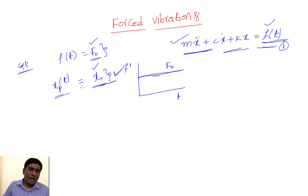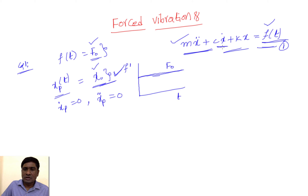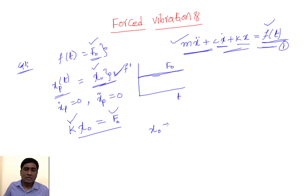When I substitute the particular solution into the equation of motion, the double differentiation of x_p is zero (since x₀ is constant), so the m·ẍ term becomes zero and the c·ẋ term also becomes zero. We are left with k·x₀ = F(t) = F₀. Since we know both k and F₀, we can write x₀ = F₀/k. This is the amplitude value.